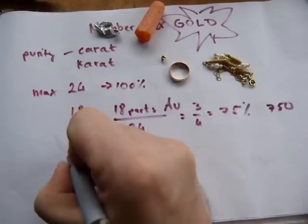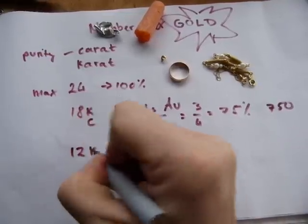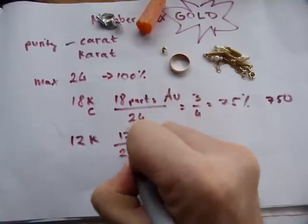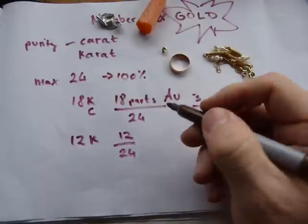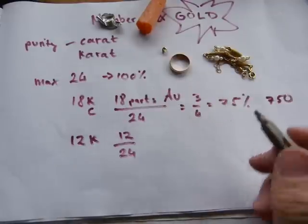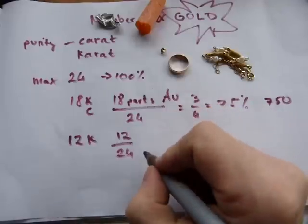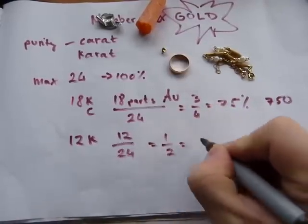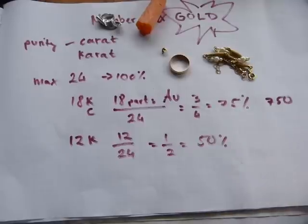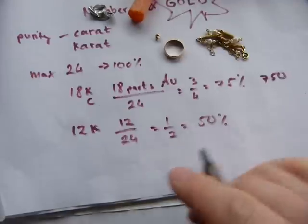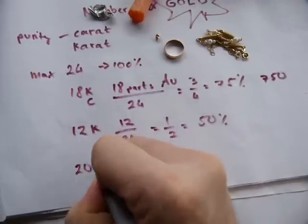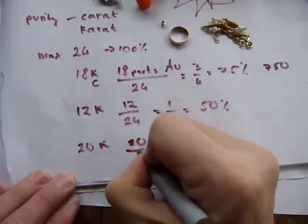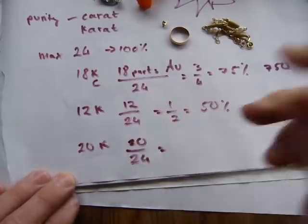If you have 12-carat gold, that means 12 parts out of 24 parts are gold and the rest is alloying elements. So 12 out of 24 is 1 out of 2, which is the same as 50%.